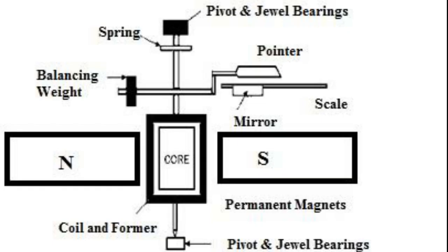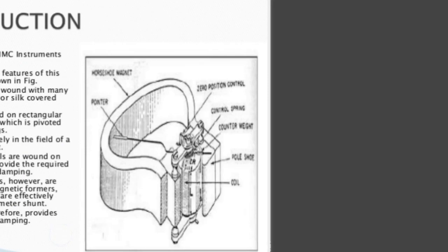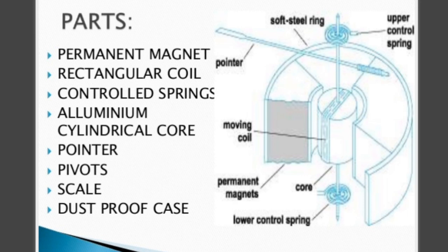The construction of the PMMC instrument is as shown in the figure. The moving coil and the permanent magnet are the main parts of the PMMC instrument. The major parts are: permanent magnets, core, coil, and pointer and scale.